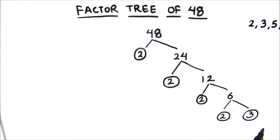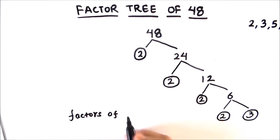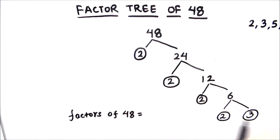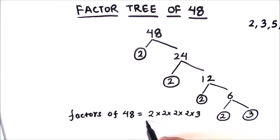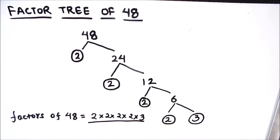As we have got all the prime numbers, we are going to stop here because we cannot further divide the numbers. This is the factor tree for 48, and the prime factors of 48 are all the circled numbers: 2 times 2 times 2 times 2 times 3. There can be more than one factor tree for 48, but all the factors will be the same, so we will get the same answer.